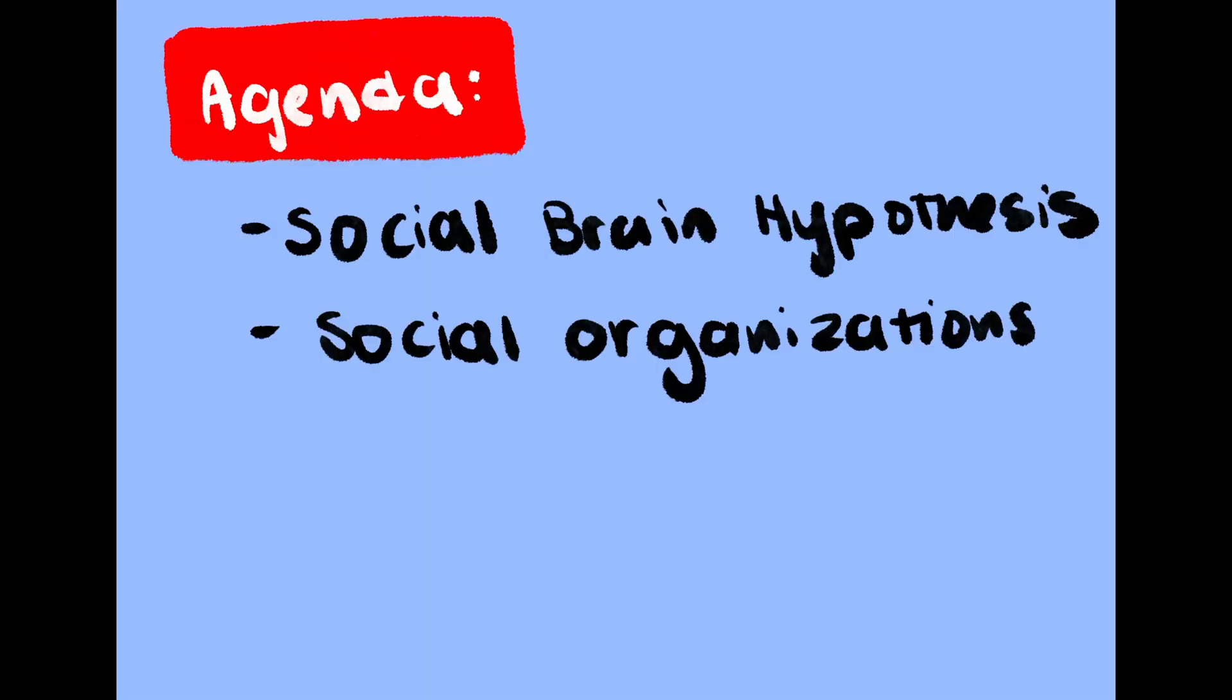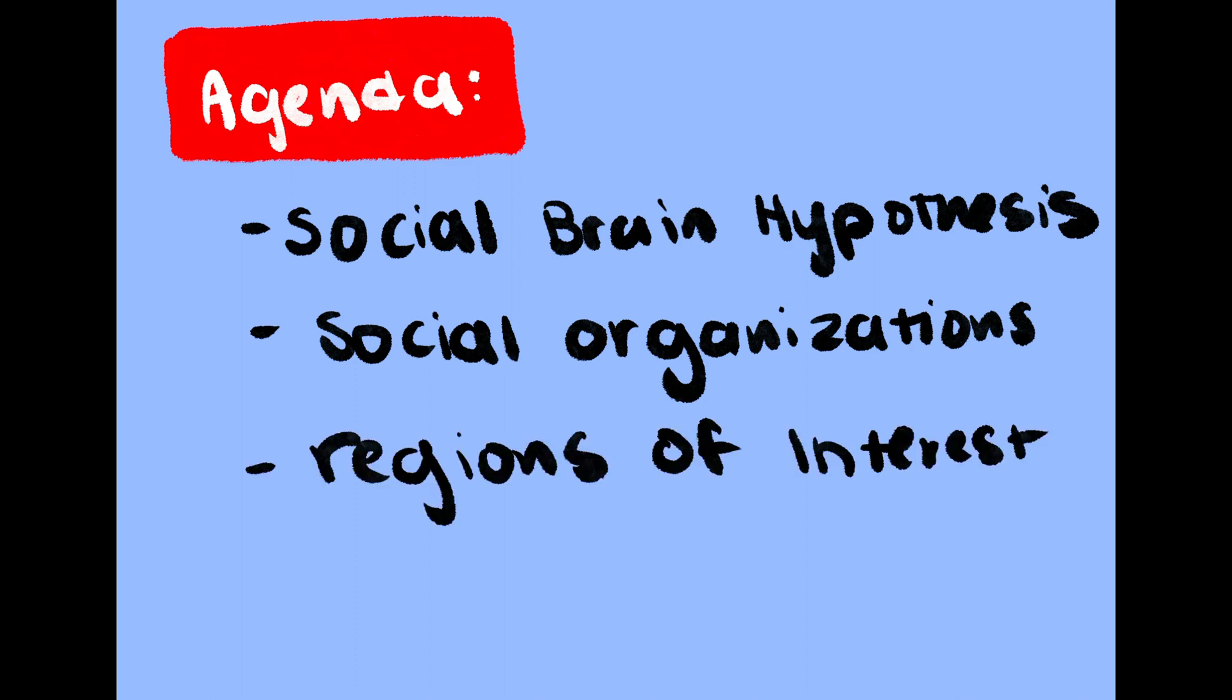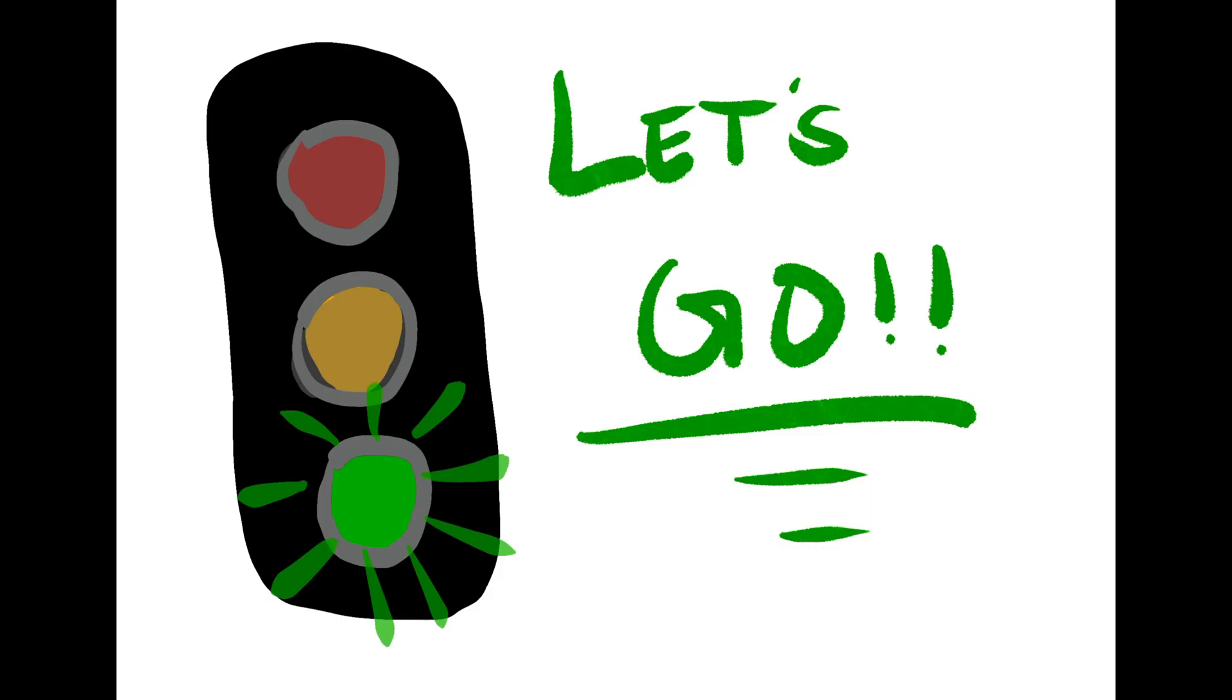We will go into the social brain hypothesis, what social organizations are and why they are necessary, and then finally close out with a mini review on some of the regions of interest and their functions. With that being said, let's get started.